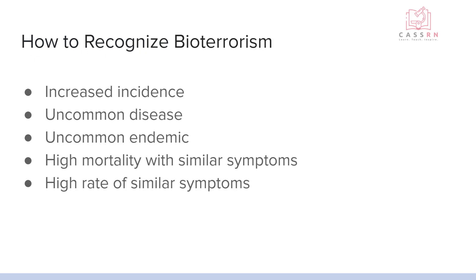It's important for the community health nurse to be able to recognize bioterrorism. What you might see is an increased incidence of disease, an uncommon disease for your area — such as Ebola appearing in the United States — or an uncommon endemic, meaning a disease that normally occurs in your area but at an uncommon time, like getting the flu during the summer. You may also see diseases with a high mortality rate or a high rate of similar symptoms in your area.